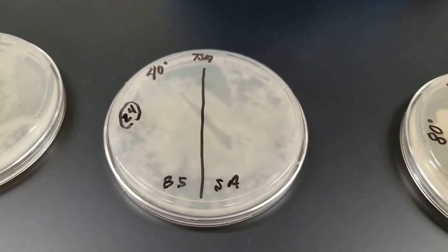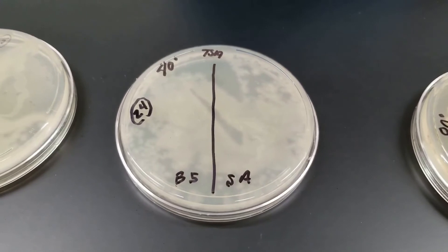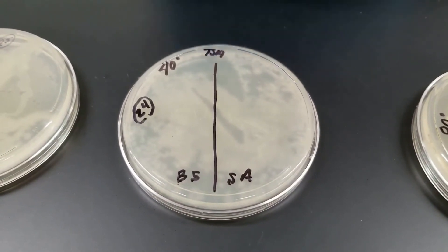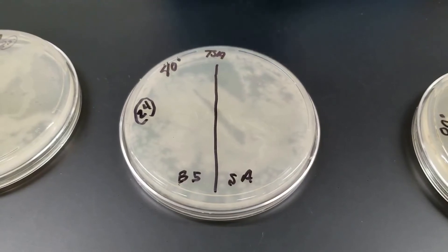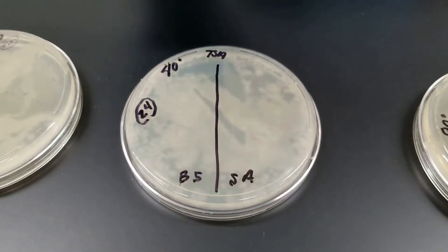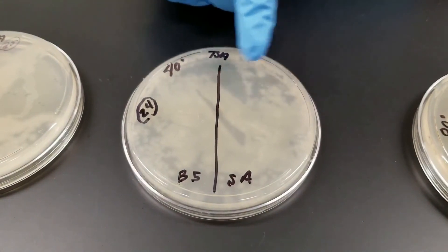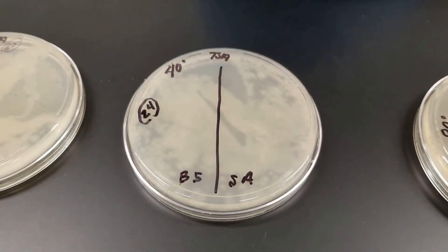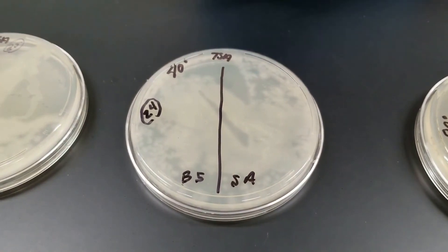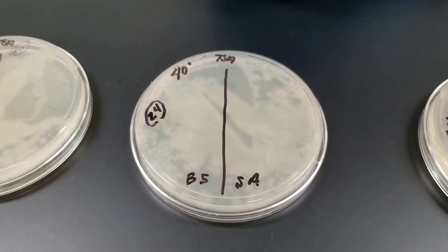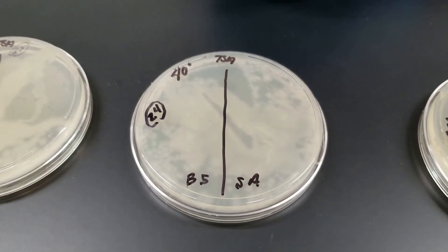The sample after having it at 40 degrees Celsius for 10 minutes, we streaked on the plate. Once again, same two cultures. So we have the Bacillus subtilis versus the Staphylococcus aureus. There's still some out-competition going on here. The Bacillus out-competed the staph aureus, but the point is you still had growth of both cultures at 40 degrees Celsius.